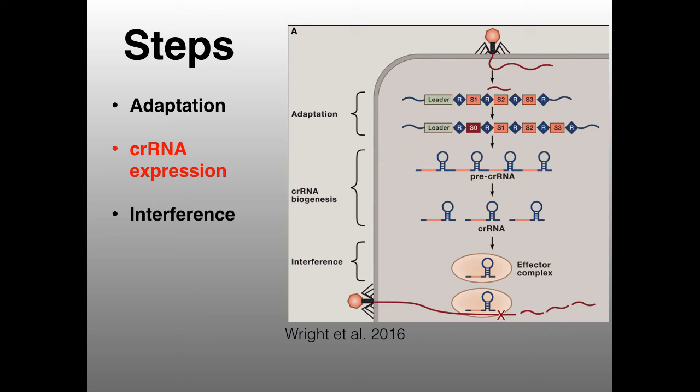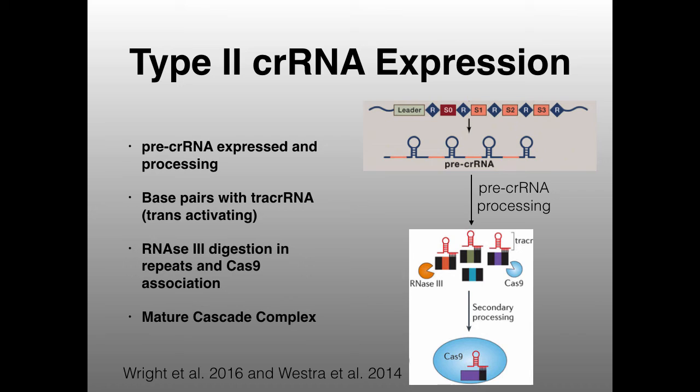So we've talked about the adaptation step: the virus injects its nucleic acid, the nucleic acid gets integrated as a spacer into the CRISPR locus. The next time this cell is infected by the same virus whose sequence was integrated into the spacer region, it should now be immune to that infection. There's a process by which this immunity is carried out. The first step is making CRISPR RNA, or crRNA. Looking again at our CRISPR locus, we have our leader followed by a repeat, and here's the spacer that was just integrated. When you have transcription of this, you end up with what's called a pre-crRNA.